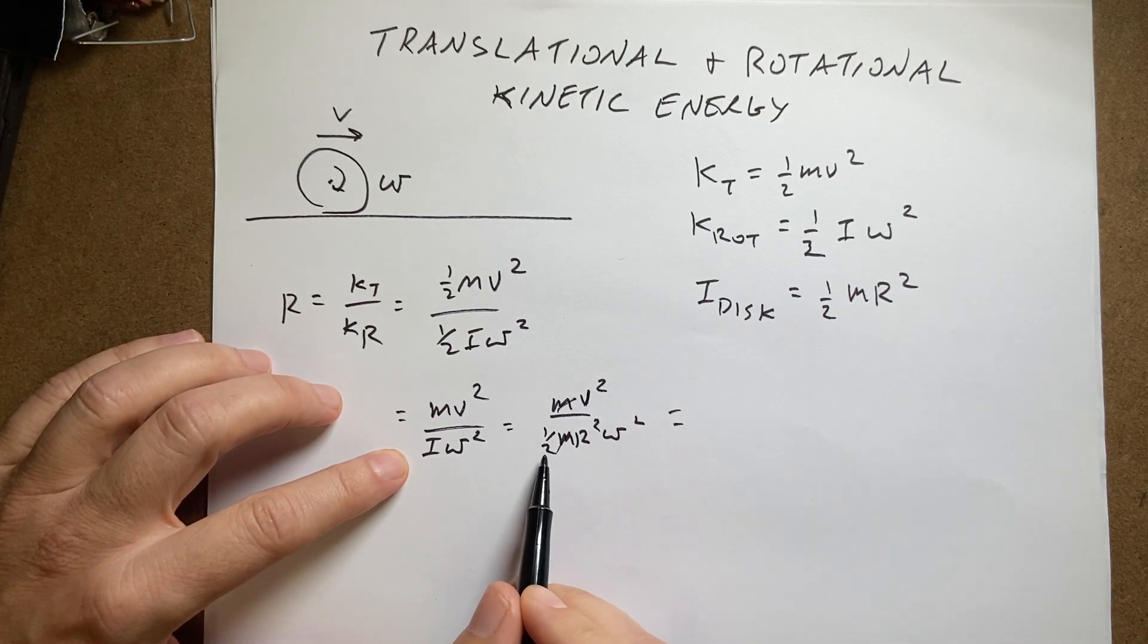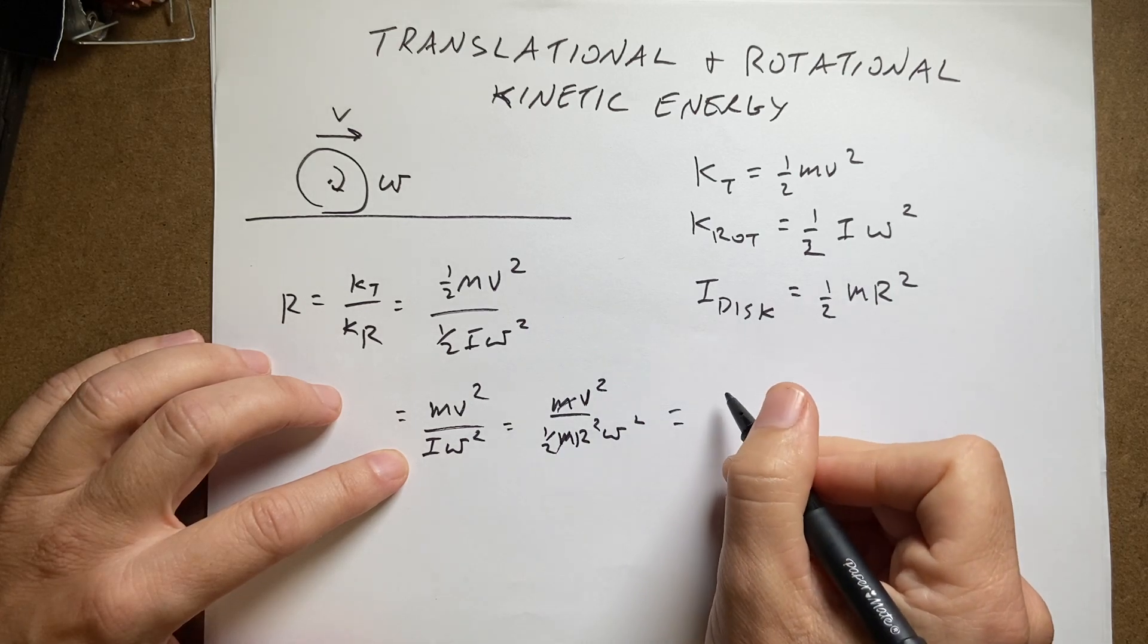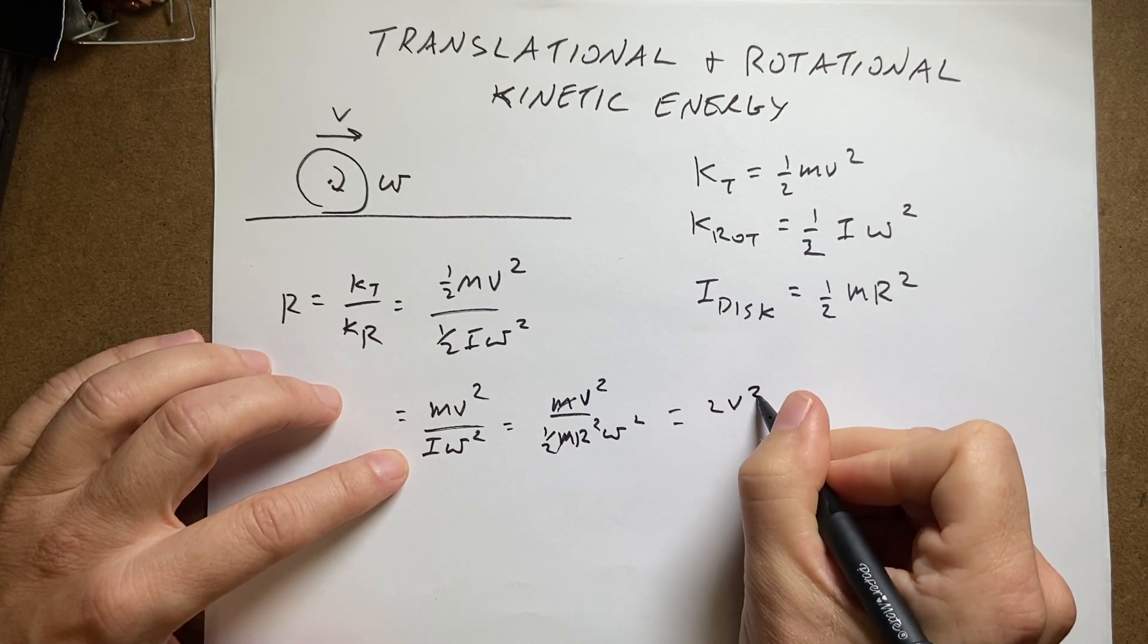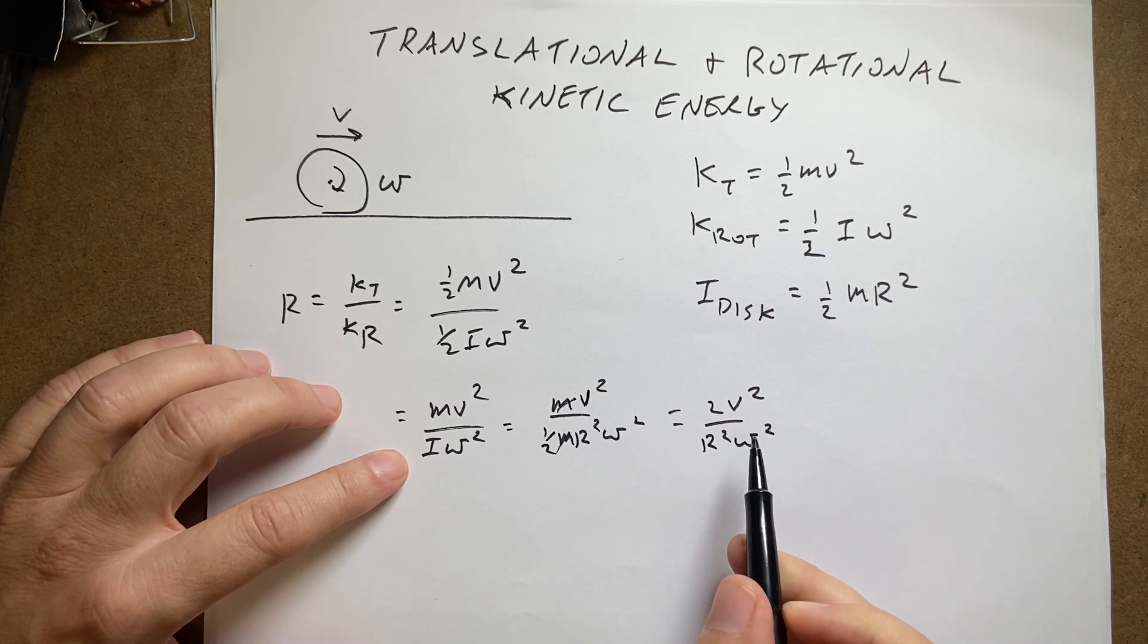And I'm going to have an improper fraction so I'm going to divide, multiply both sides by half, I'm sorry, divide both sides by half which is multiplying by 2, and I get 2v squared over r squared omega squared.